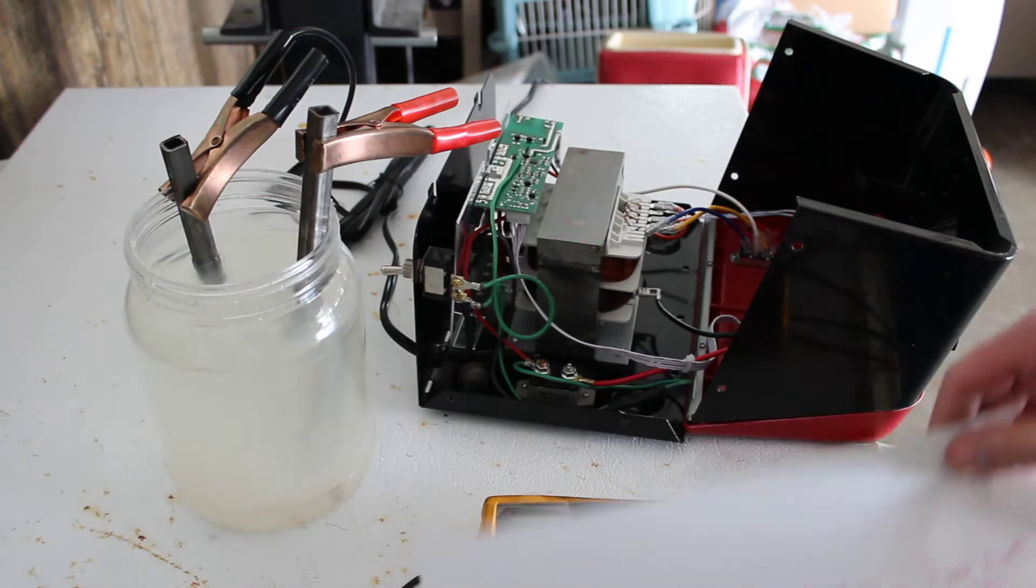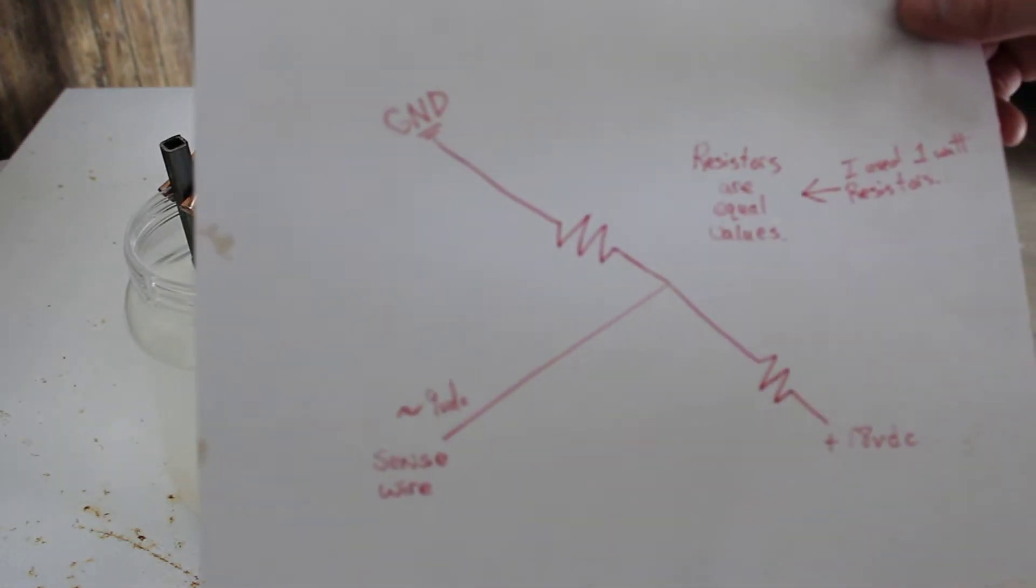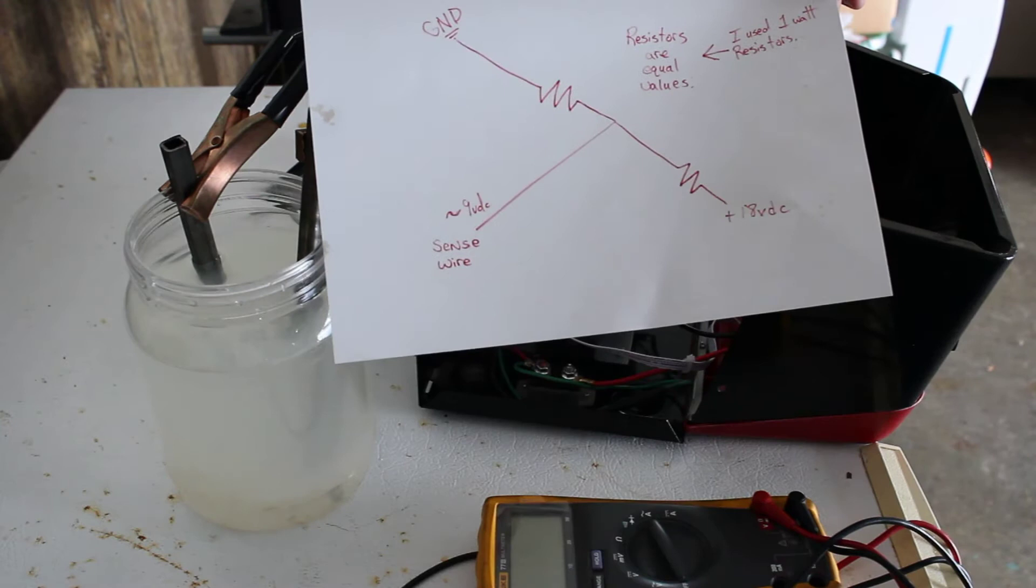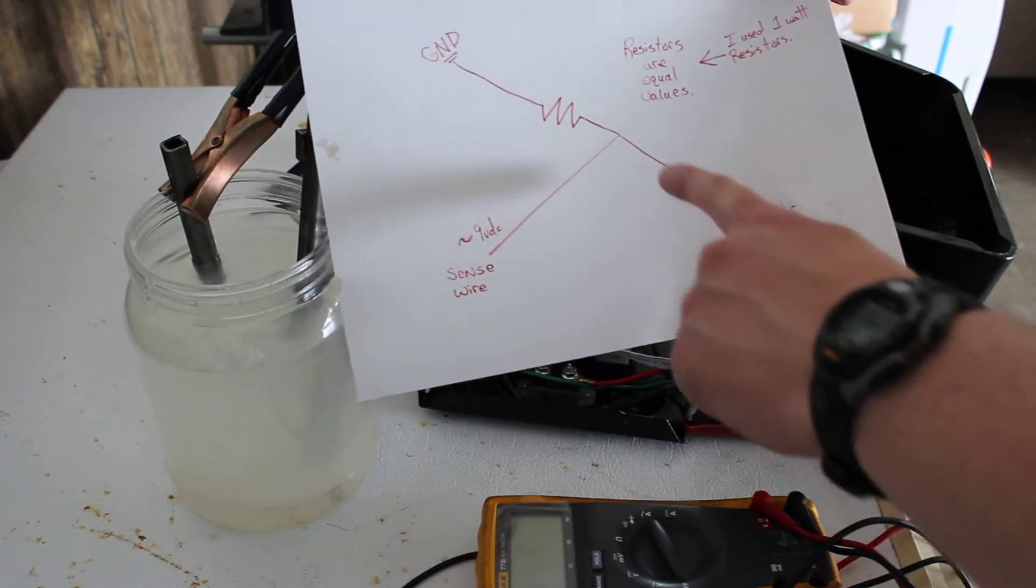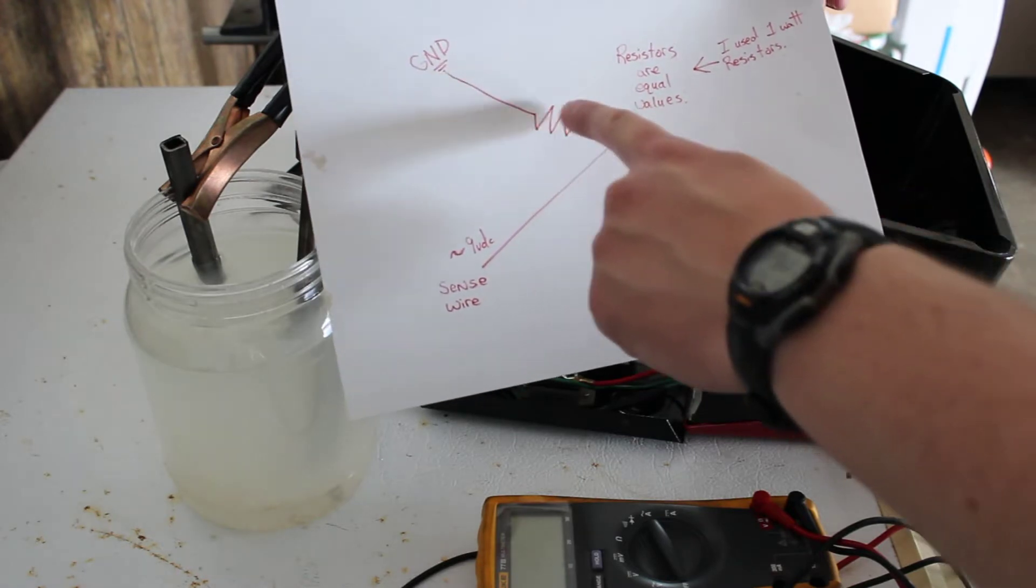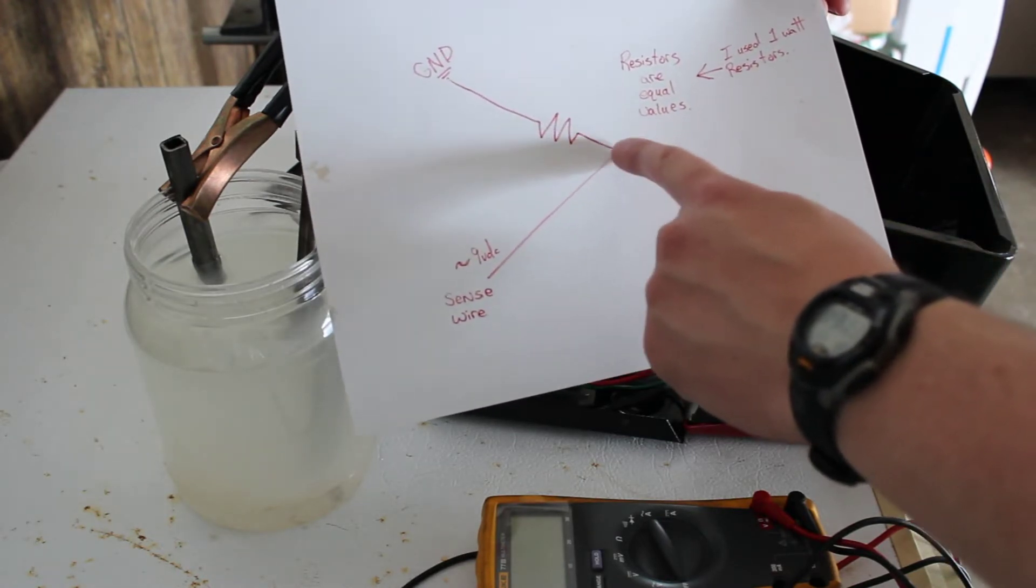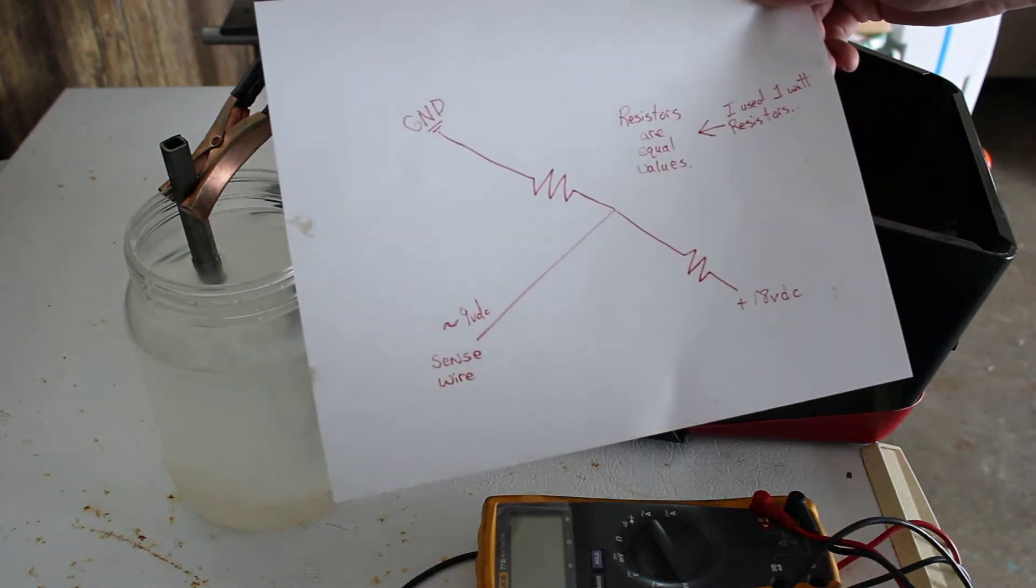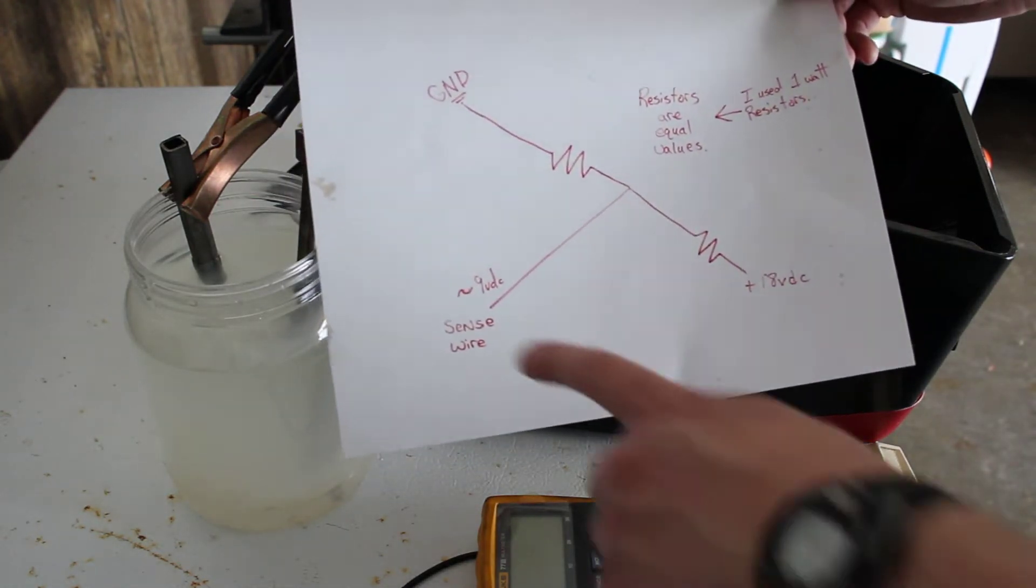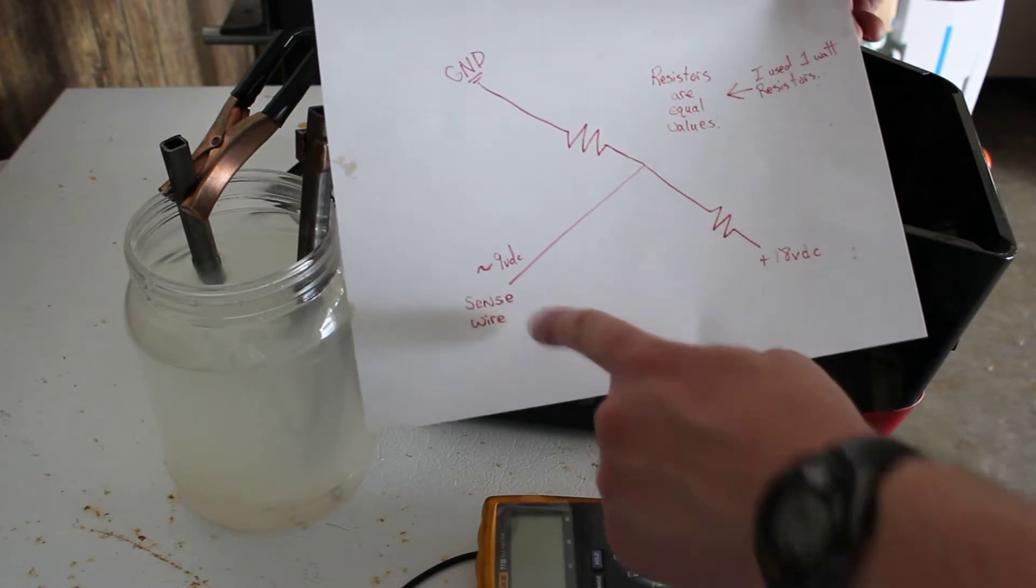This is the voltage divider circuit that I was talking about. Basically, we're pulling off 18 volts DC, running it through a resistor, pulling off ground, running it through a resistor, and where those two resistors join, we're getting 9 volts DC, roughly, maybe 8, 8.5, somewhere in there. It's good enough for what we're doing, and we're tying that into a sense wire.